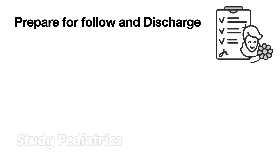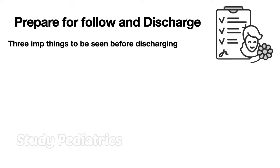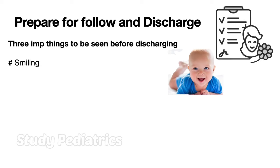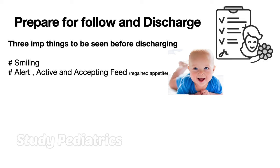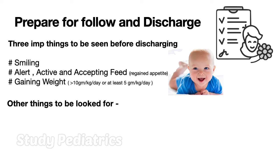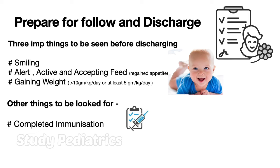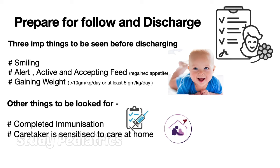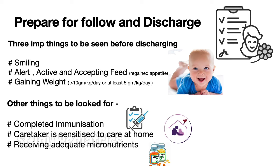The tenth point in management is discharge and follow-up. Three things must be seen before discharging: first, the baby has started smiling — smiling is one of the earliest indicators of recovery — and the child is alert, active, and accepting feed with regained appetite. Second, the child has regained weight, gaining more than 10 grams per kg per day, or at least 5 grams per kg per day. Third, completed immunization, caretaker is sensitized to care for the child at home, and the child is receiving adequate micronutrients.